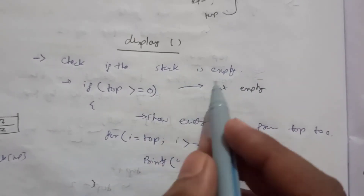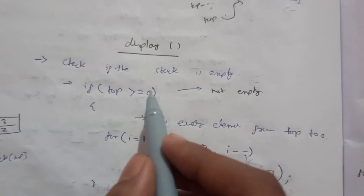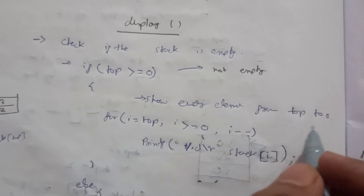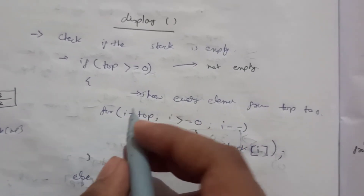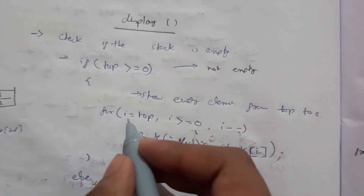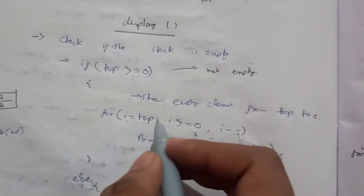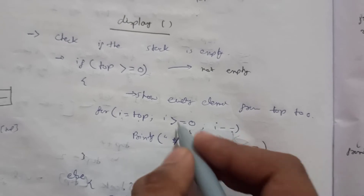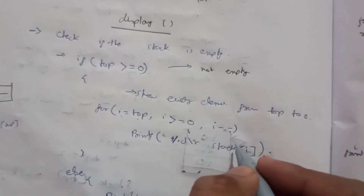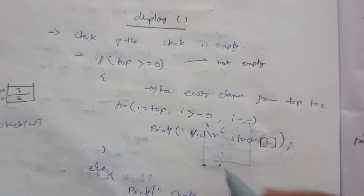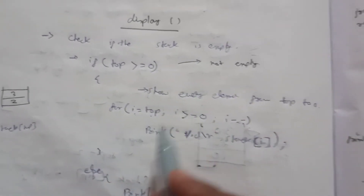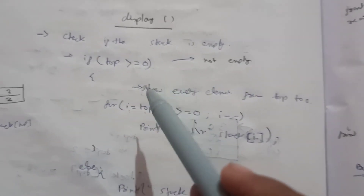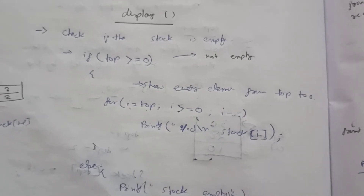For the display operation, first check if the stack is empty: if top is greater than or equal to zero, the stack is not empty. Then use a for loop from top down to 0, decrementing i by one each time and printing stack[i]. In the else part, when top is less than or equal to minus 1, we print that the stack is empty.